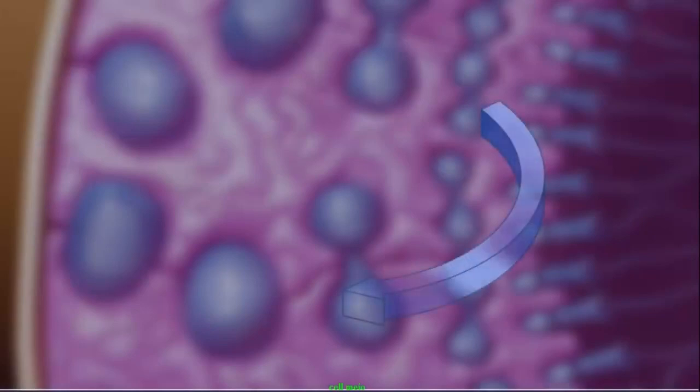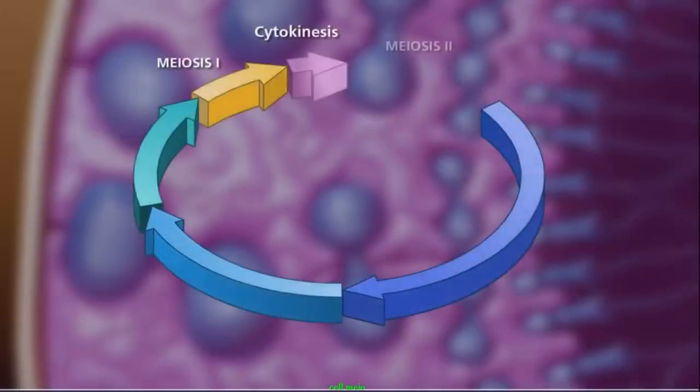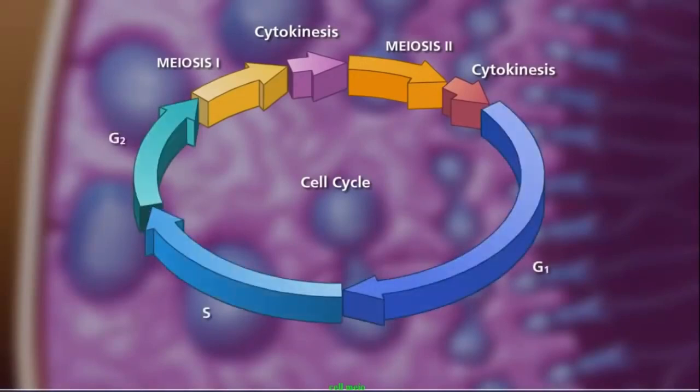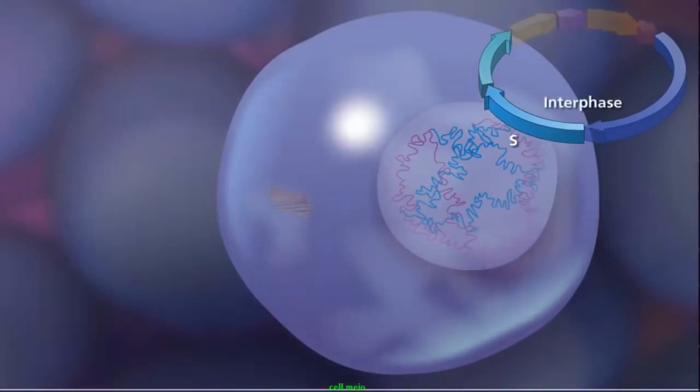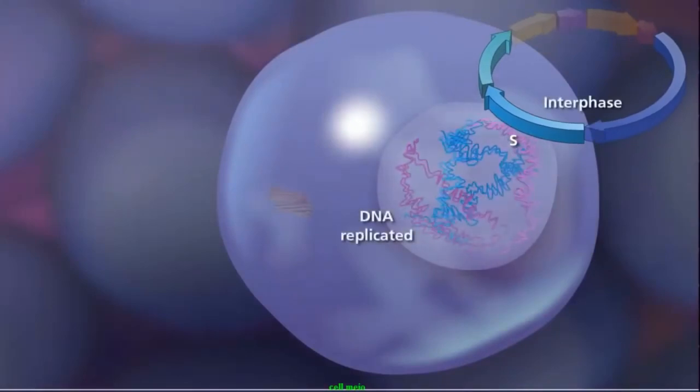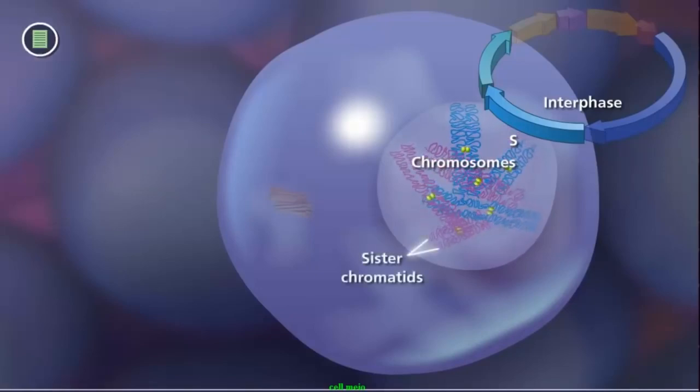As in mitosis, meiosis begins after a cell has successfully completed the G1, S, and G2 stages of interphase. During the S phase of interphase, the DNA is replicated, producing two copies of each chromosome called sister chromatids.